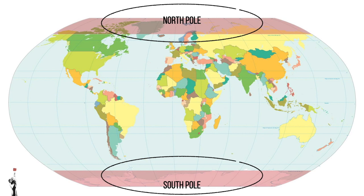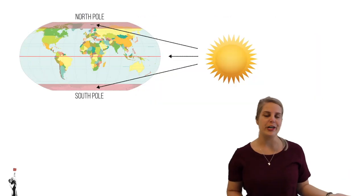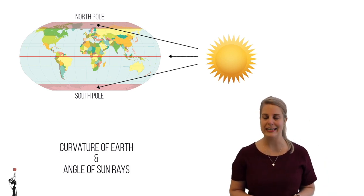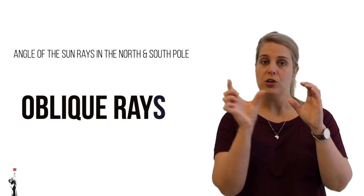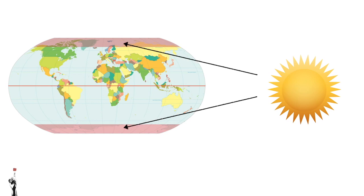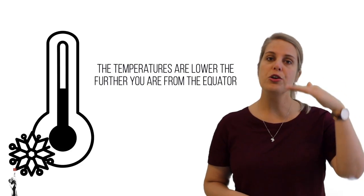On the other side of the world we have the poles — the north pole and the south pole. We know that these places are very cold, frozen, and very far from the equator. This is also due to the curvature of the earth and the angle at which the sun's rays hit the poles. These are called oblique rays or indirect rays. Because these rays don't strike directly like those over the equator, a lot of the heat is spread out and doesn't fully reach its destination, so the area is cooler the further you are from the equator.